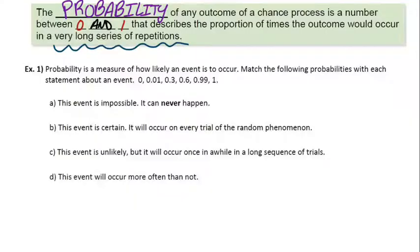A number between 0 and 1 that describes a proportion of times the outcome would occur in a very long series of repetitions. That's the definition of probability. So, the first example here, probability is a measure of how likely an event is to occur. Match the following probabilities with each statement about an event. It looks like we've got 1, 2, 3, 4, 5, 6 probabilities, but only 4 outcomes to match with.